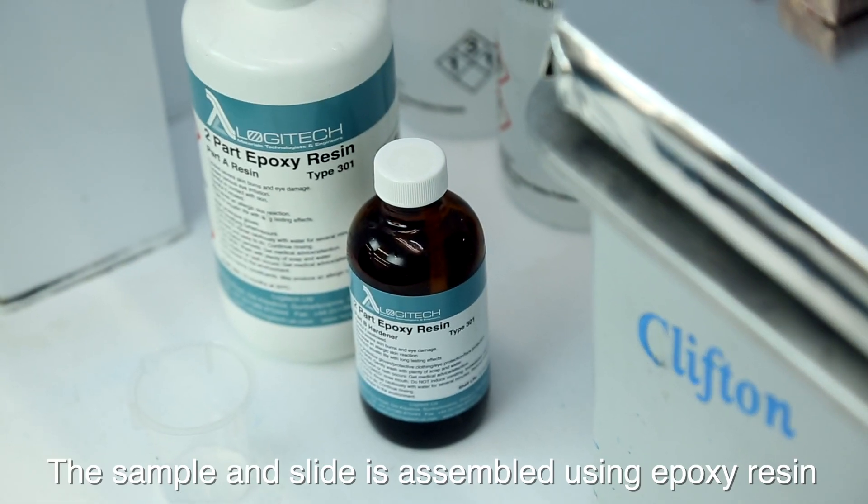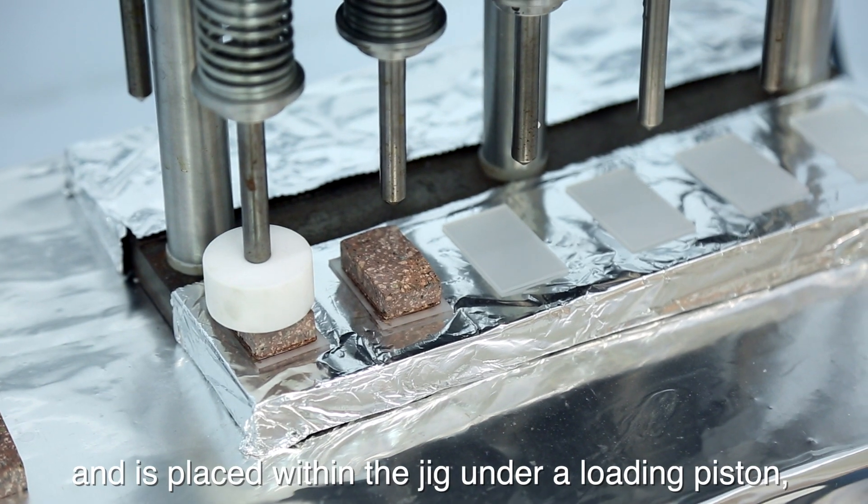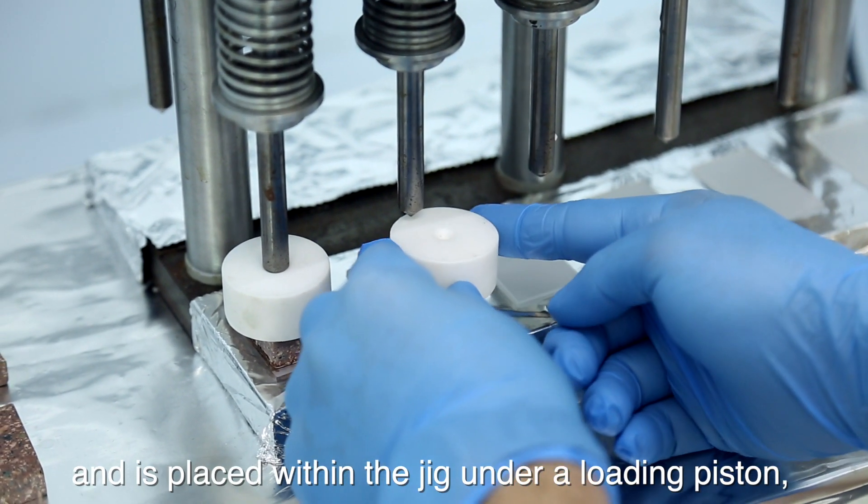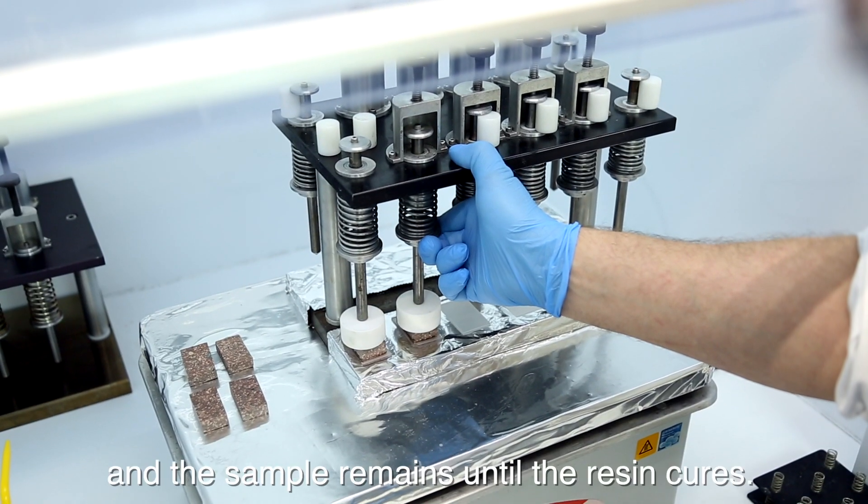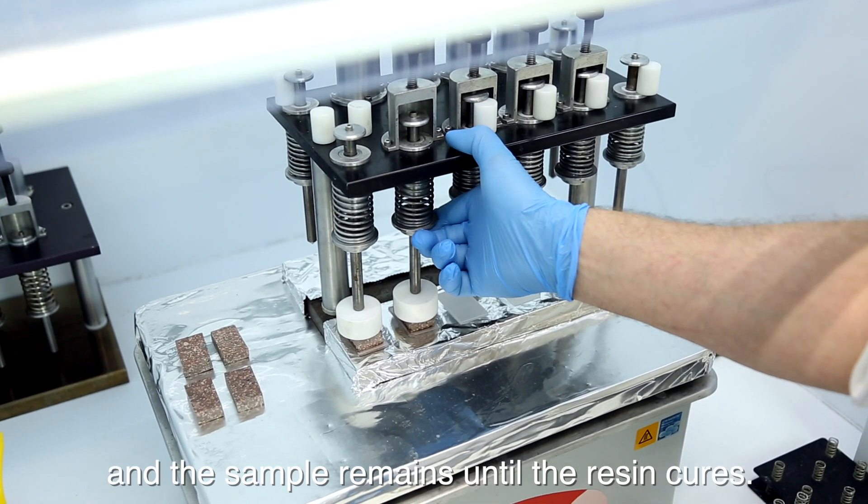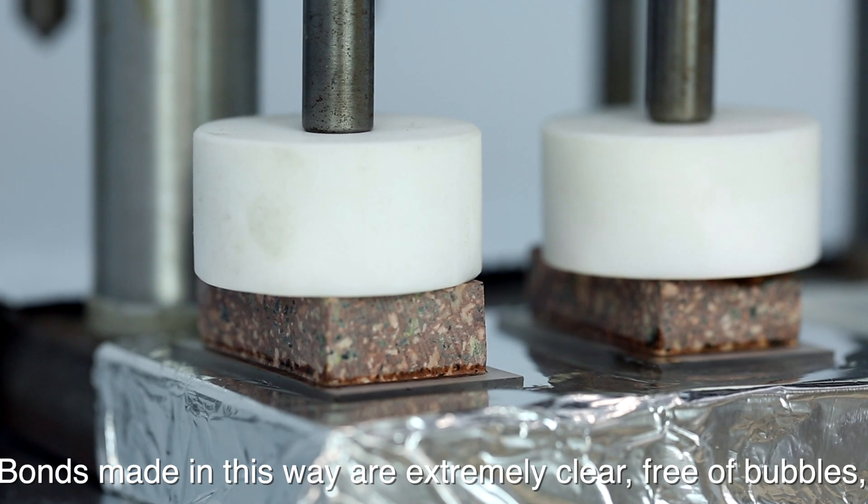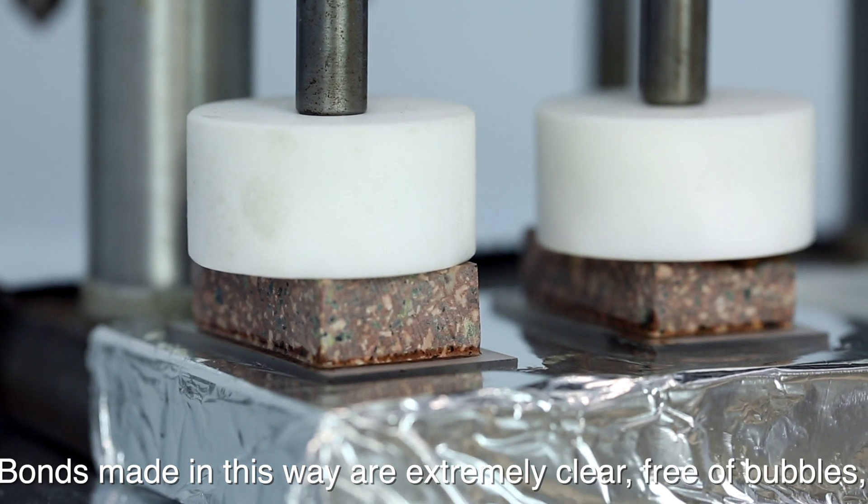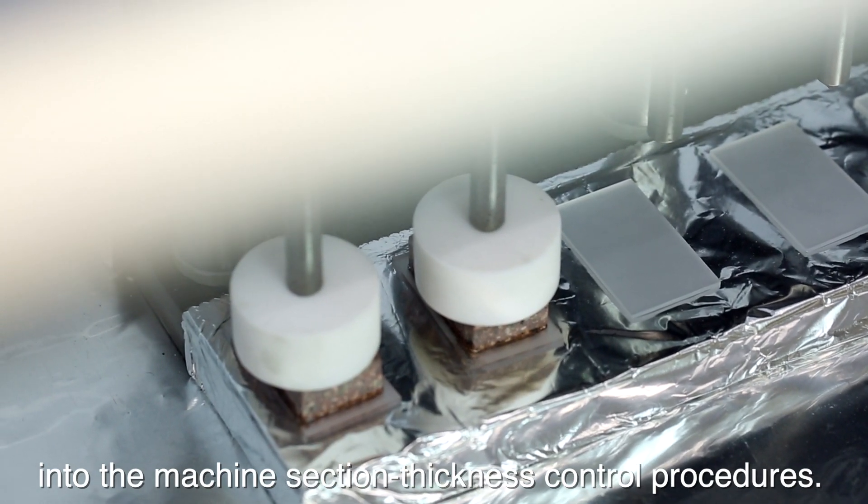The sample and slide is assembled using epoxy resin and is placed within the jig under a loading piston, where pressure is applied and the sample remains until the resin cures. Bonds made in this way are extremely clear, free of bubbles and introduce zero-dimensional error into the machine section thickness control procedures.